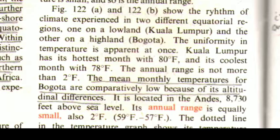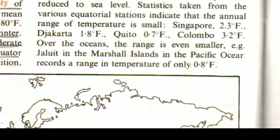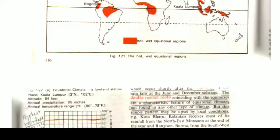The uniformity in temperature is apparent at once. Kuala Lumpur has its hottest month at 80 degrees Fahrenheit and its coolest month at 78 degrees Fahrenheit; the annual range is not more than 2 degrees Fahrenheit. The mean monthly temperatures for Bogota are comparatively low because of its altitudinal differences — it is located in the Andes at 8,730 feet above sea level — and its annual range is equally small, also 2 degrees Fahrenheit, that is 59 to 57 degrees Fahrenheit. Statistics from various equatorial stations indicate small annual ranges: Singapore 2.3°F, Jakarta 1.8°F, Quito 0.7°F, Colombo 3.2°F. Over the oceans the range is even smaller — Jaluit in the Marshall Islands records only 0.8°F.